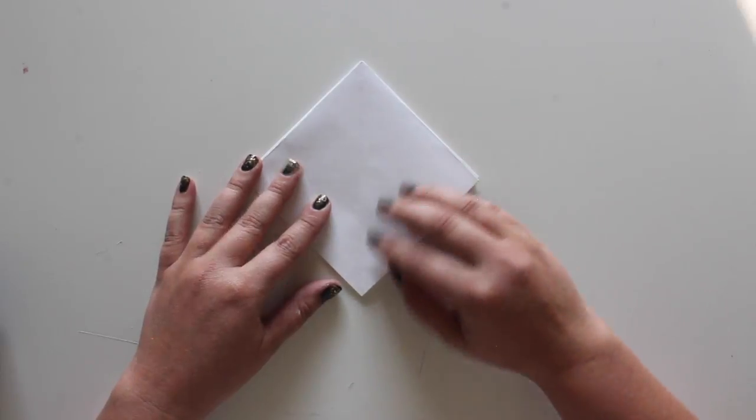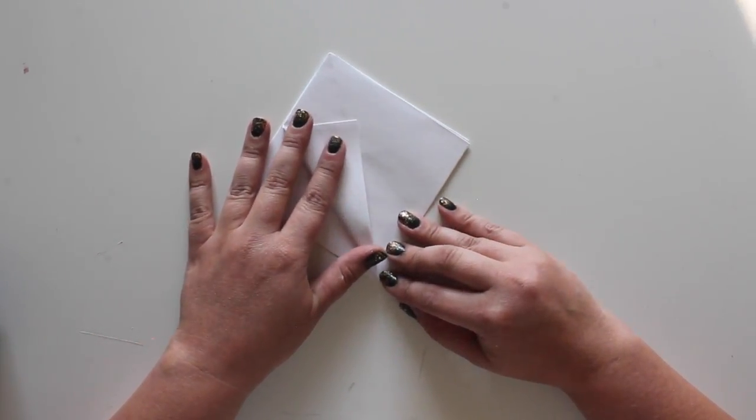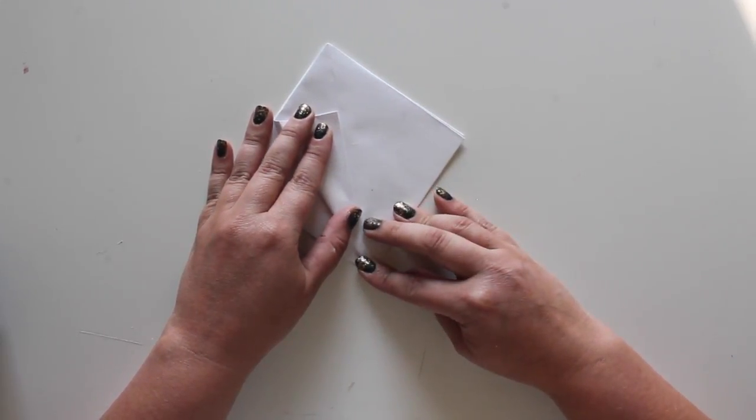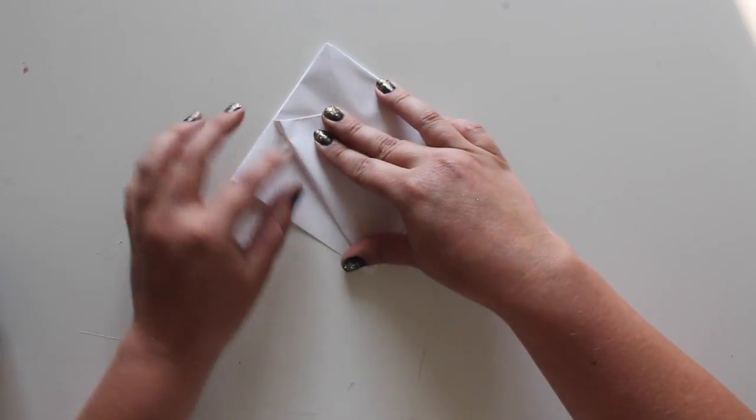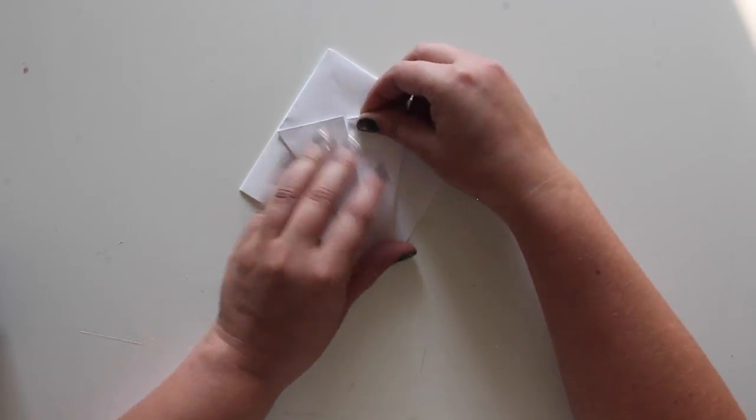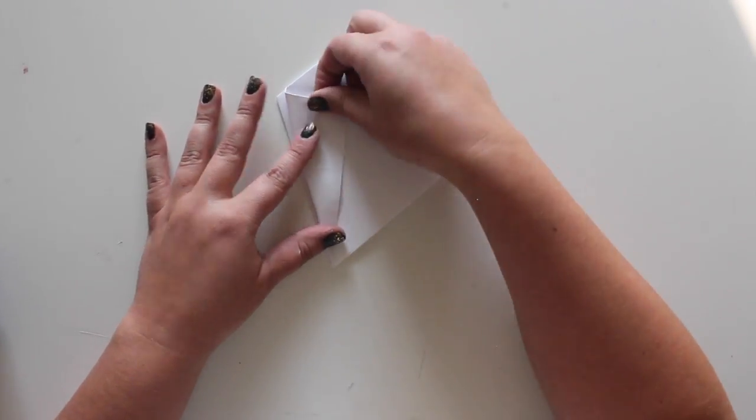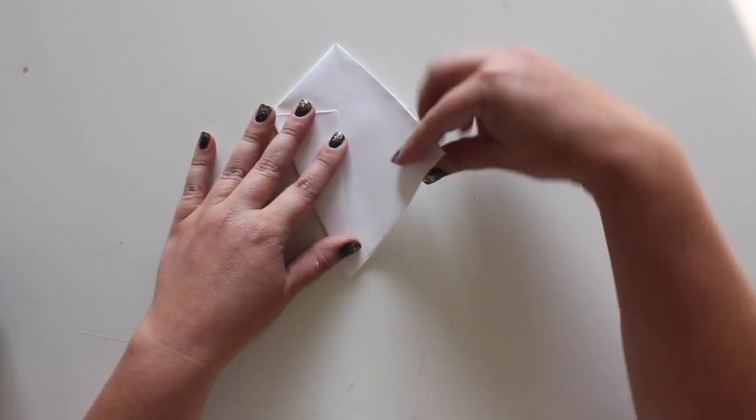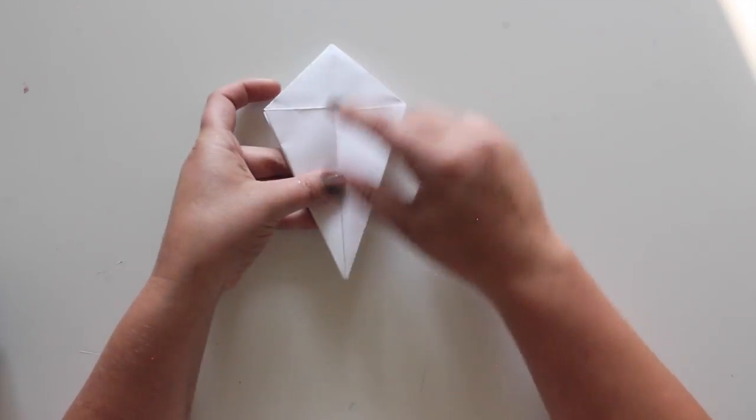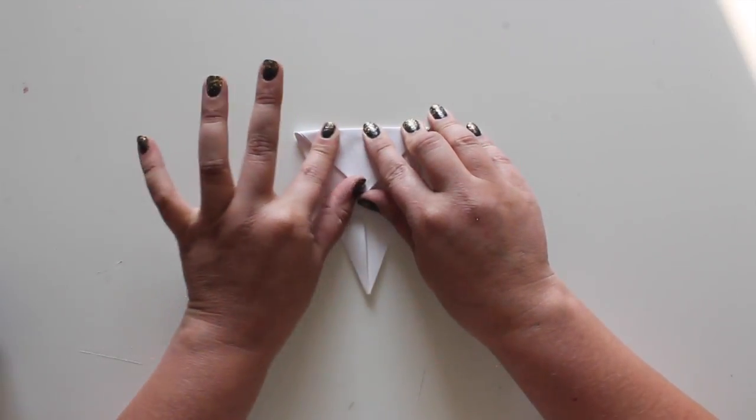Now we'll make a kite shape by folding in the left and right corners to the center fold line. Do this on both the front and back for a total of 4 folds. Crease the triangle segment at top downward, then flip over and crease downward on the other side as well.